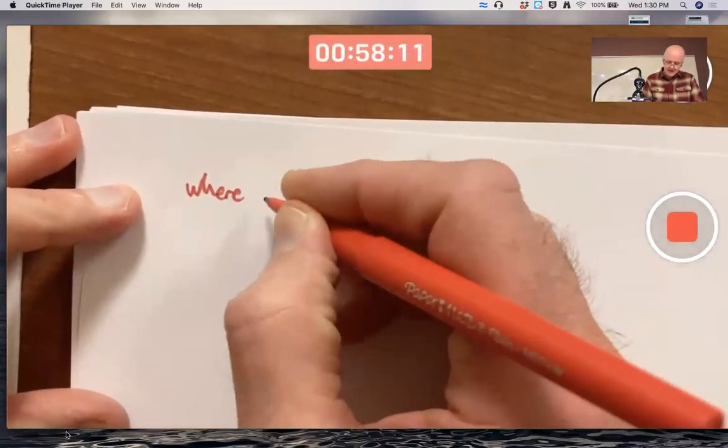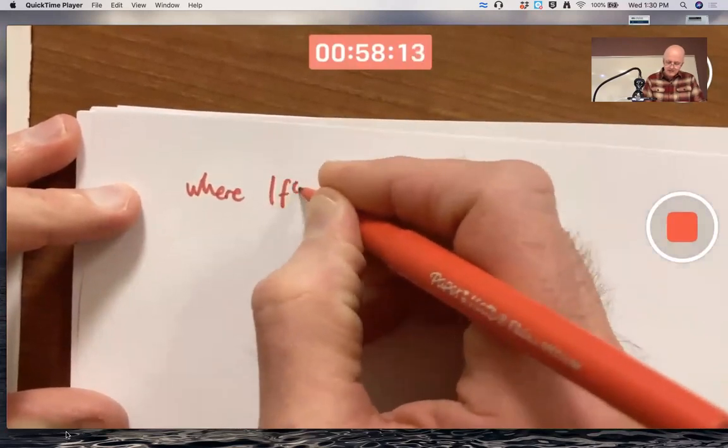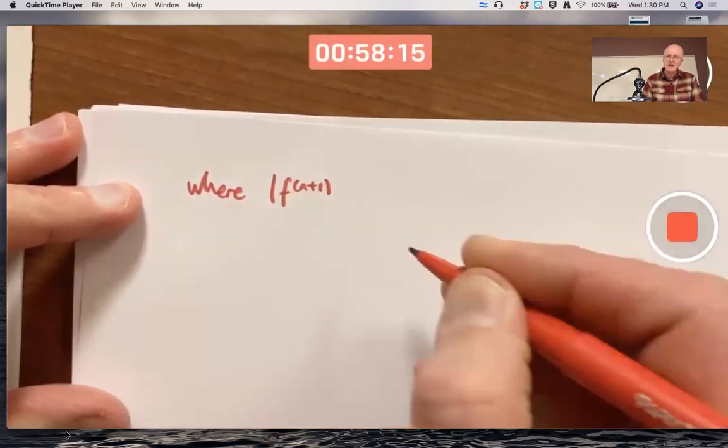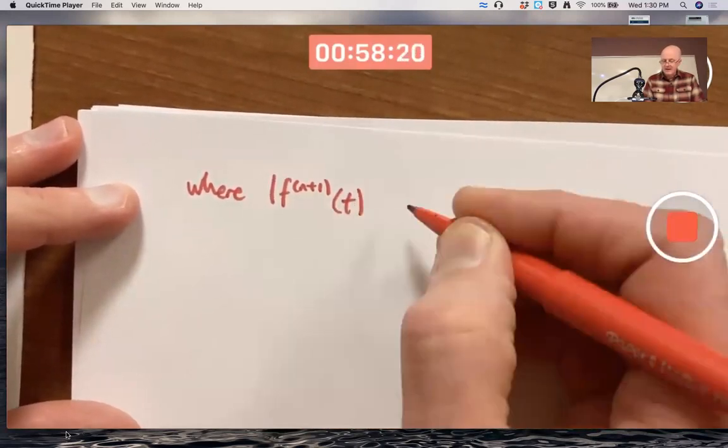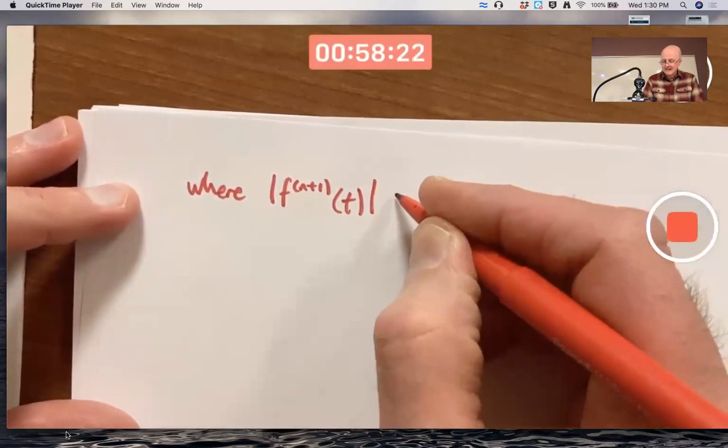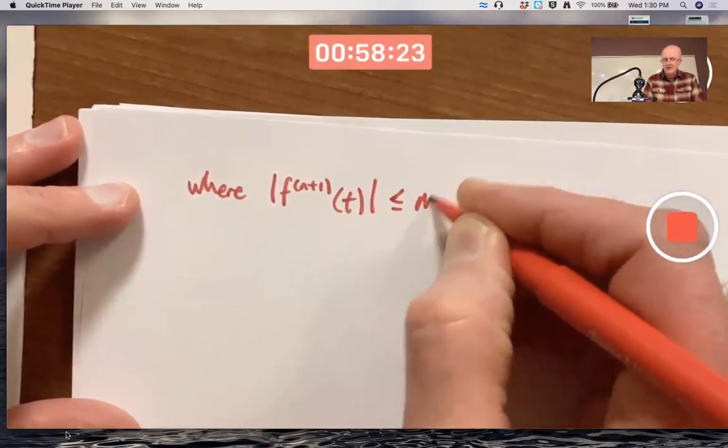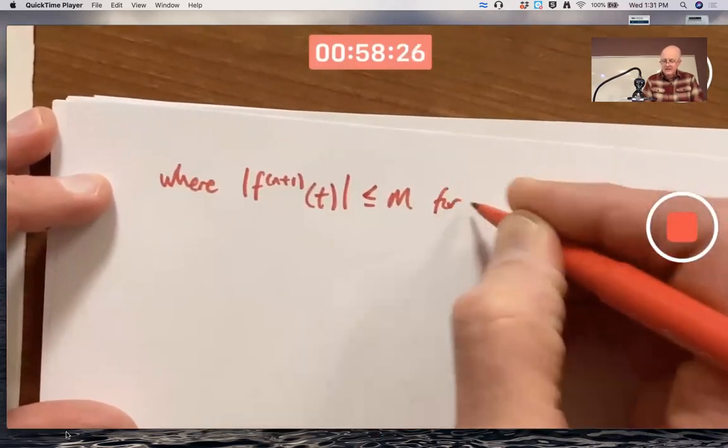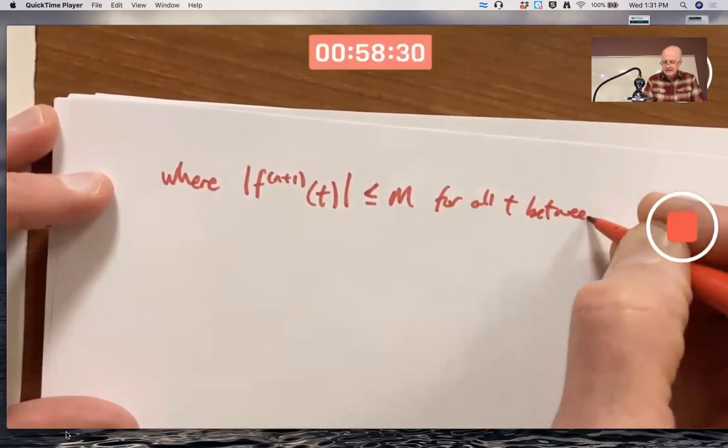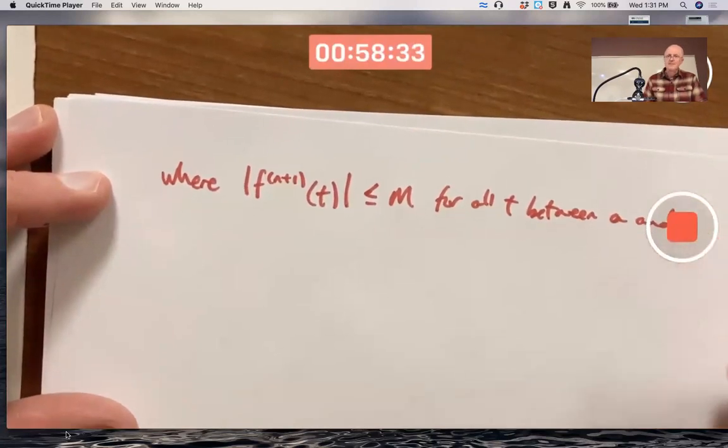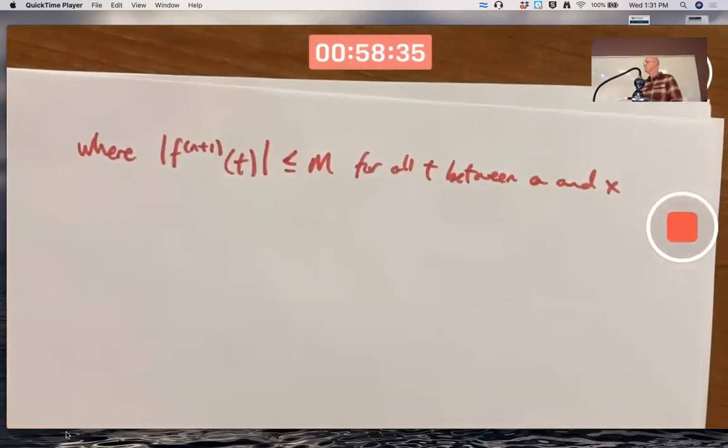Where the absolute value of the n plus first derivative, that's the notation for n plus first derivative, remember, evaluated at t is less than or equal to M for all t between a and x. Typically a is 0. What's x? x could be anything.